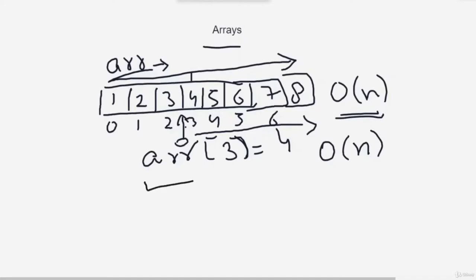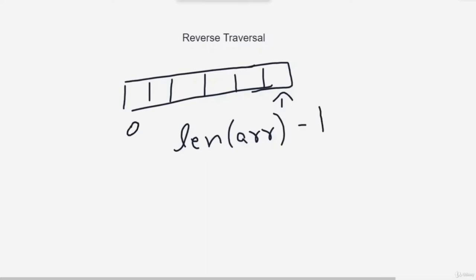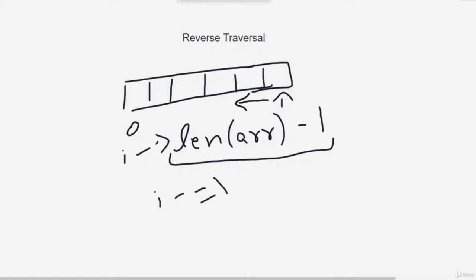Getting an element when you know its index only takes O(1) time. Those are the basics of arrays. Let's move on to reverse traversal — basically traversing an array in the reverse direction, starting from the last index. You need to know the length of the array; in Python it's len(arr). You need index length minus 1 as the last index, then keep reducing by 1 to reverse traverse the array.